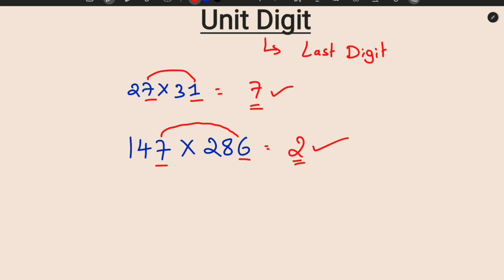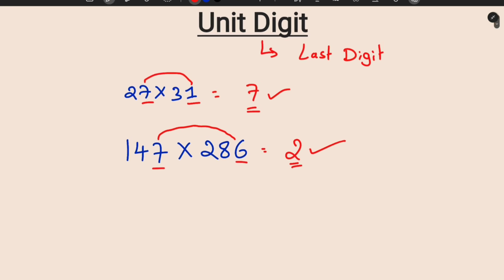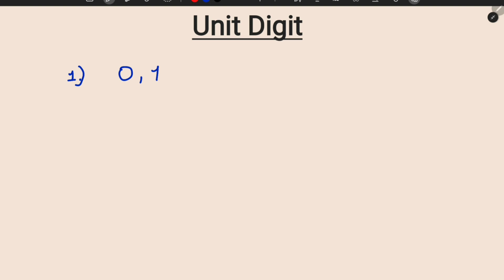For all numbers there are some tricks, some key points. You can save the video and observe it. You can get a full grip on unit digit. First of all, certain unit digits — 0, 1, 5, 6 — the last number is always the same.